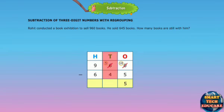Subtract the digits in the tens place. 5 tens minus 4 tens is equal to 1 ten. Subtract the digits in the hundreds place. 9 hundreds minus 6 hundreds is equal to 3 hundreds.